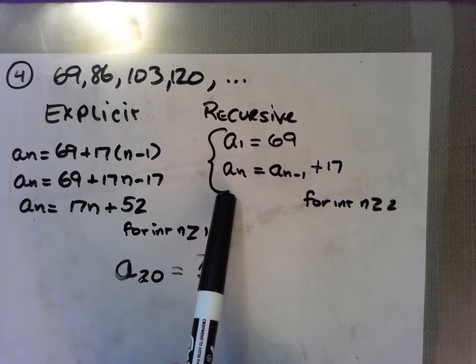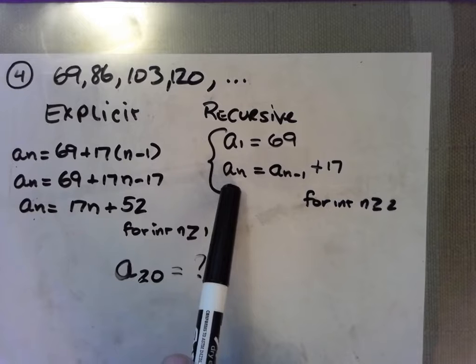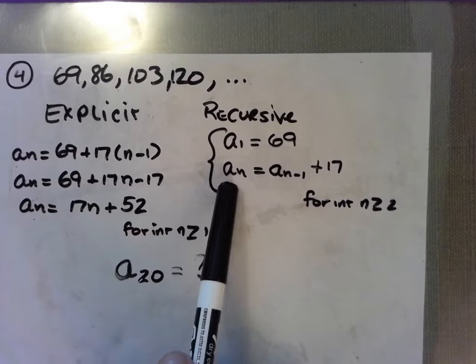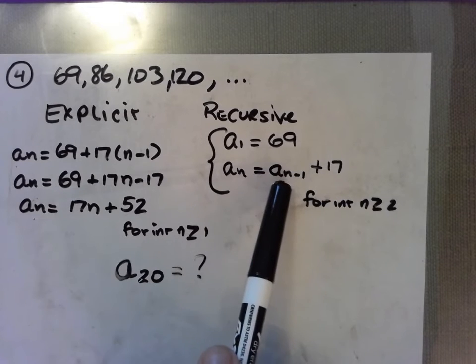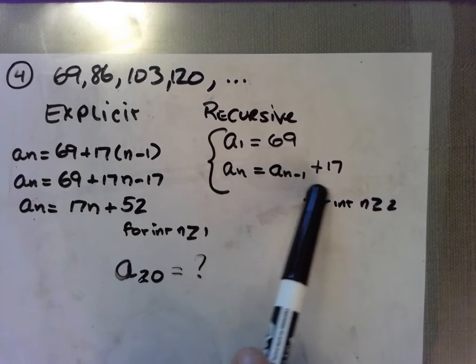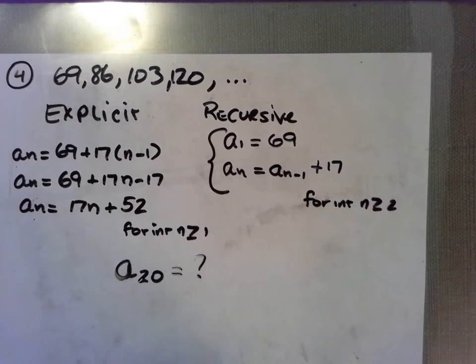Knowing the first term and the difference, I'd find the 20th term by adding 17 to the 19th term. What is the 19th term? Well, the 19th term is 17 more than the 18th term. And what's the 18th term? The 18th term is 17 more than the 17th term, and so on and so forth. It's a process.